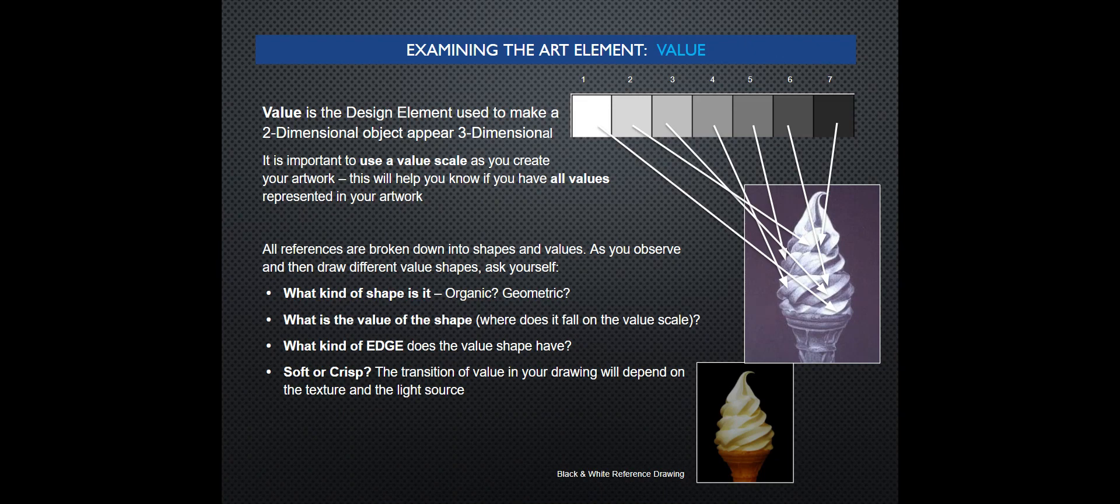Geometric would be a square, cone, cylinder. What is the value of the shape? Where does it fall on the value scale? What kind of edge does the shape have? Is it real abrupt like, look right here, that's a real abrupt edge. If you look over here, that's not an abrupt edge, that's a soft edge. Soft or crisp?